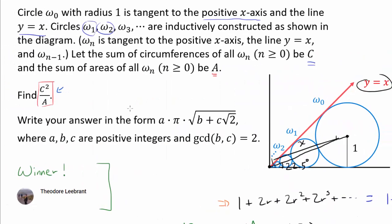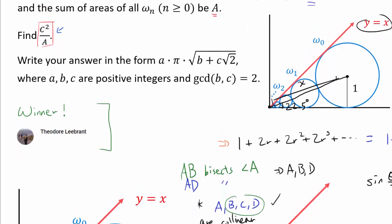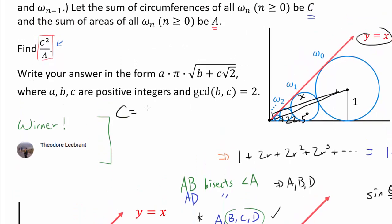So let's look at what C² over A is. So we know C is the sum of circumferences. And that's telling us C is 2π times (1 + R + R² + R³ and so on).